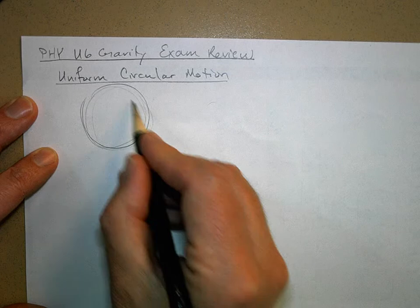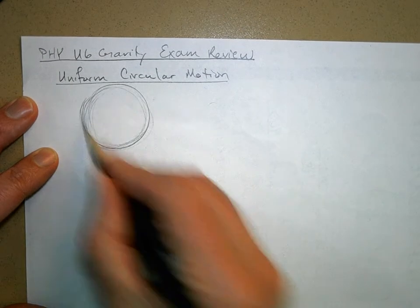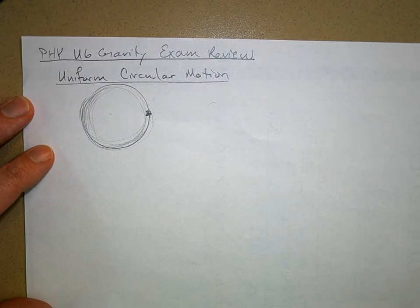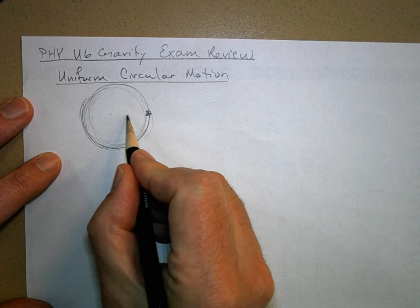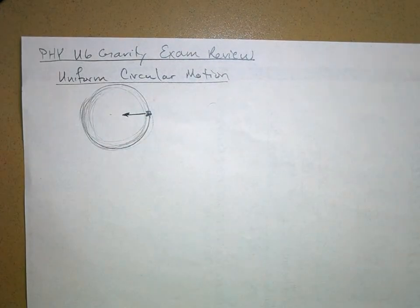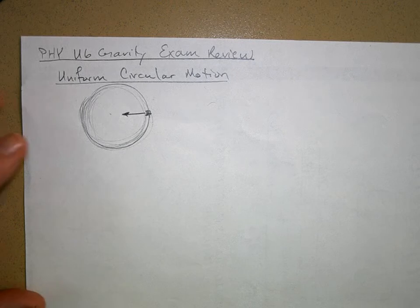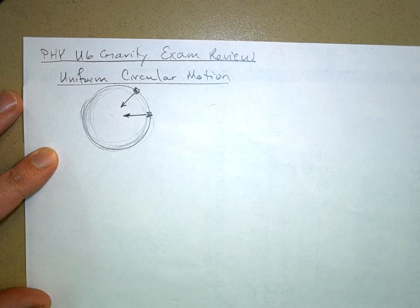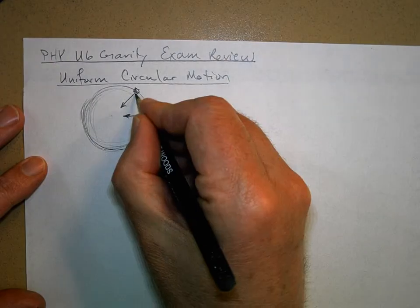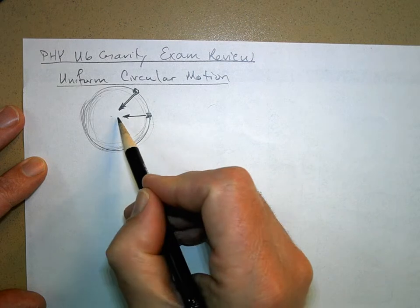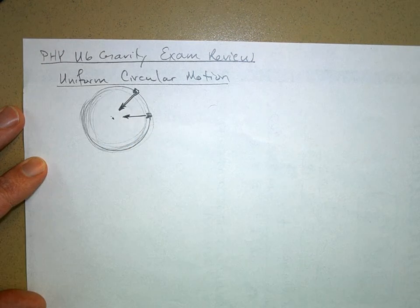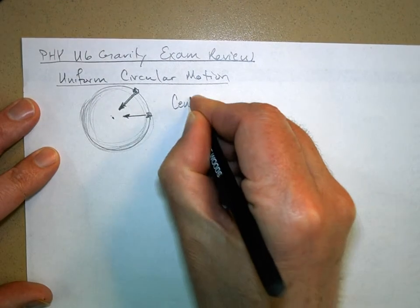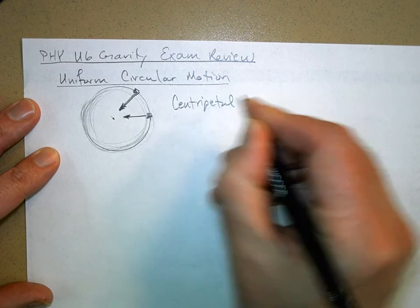If you have an object whizzing around in a circle, it has to be forced to stay in that circle. There has to be some kind of force pushing it toward the center. When the object moves, that force is the same magnitude but pointed toward the center — that's why we call it a center-seeking force. We call this centripetal acceleration.